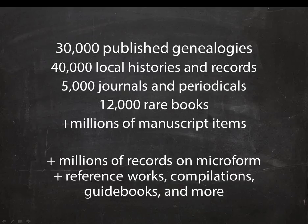There are about 30,000 published genealogies, 40,000 local histories, and state, city, and town records, over 5,000 journals and periodicals including many family association and historical society newsletters, 12,000 rare books, and millions of manuscript items such as original family papers, diaries, account books, family bibles, church records, cemetery transcriptions, photographs, and other items dating back over 400 years. We also have millions of records on microform, reference works, and more. All of these resources can be found through the library catalog.